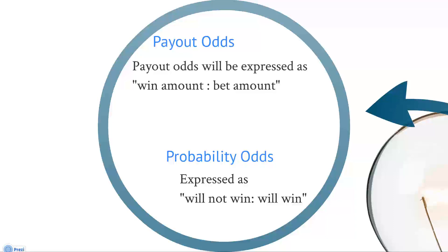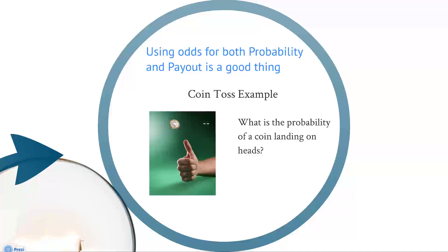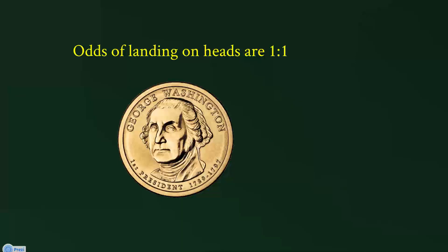This example should help you understand it better. Using odds for both probability and payout is a good thing, and this example shows why it's so much easier. Coin toss: what's the probability of a coin landing on heads? The answer is not 50% because we don't talk about percentages when we talk about odds. The odds of landing on heads are one to one. The first one represents the times it won't happen — it comes up tails — and the second one is the times it comes up heads. So the will-not to the will are one to one.